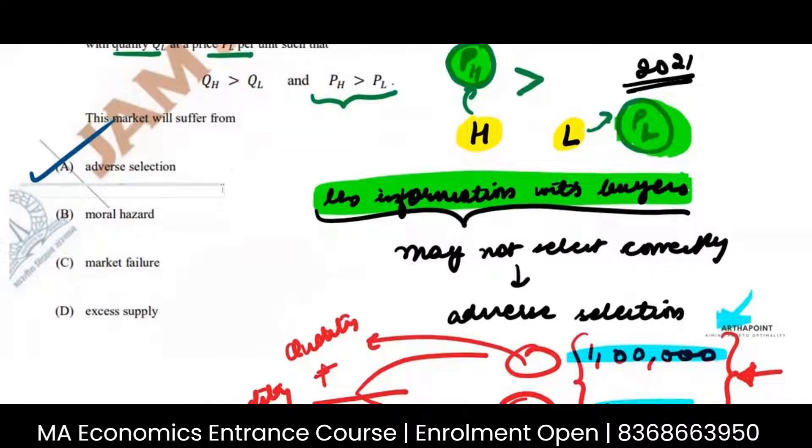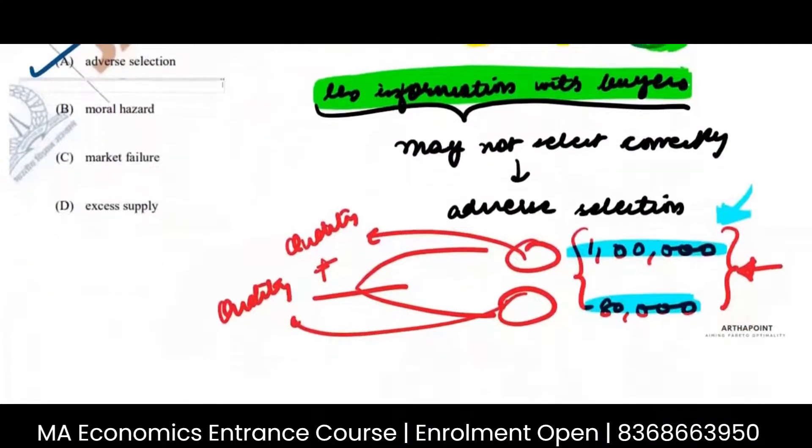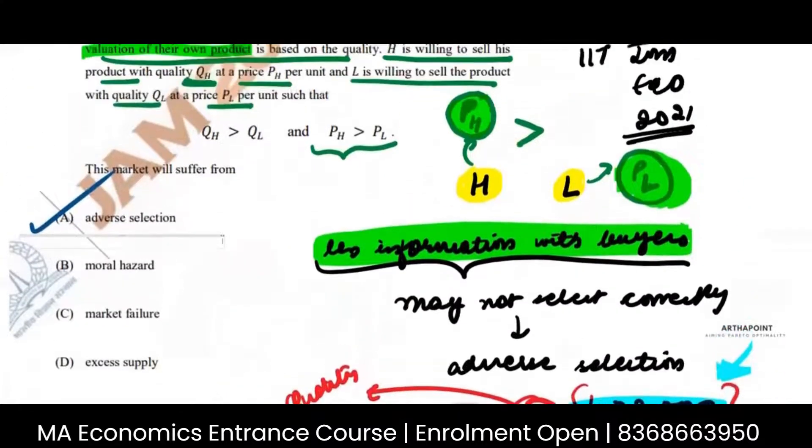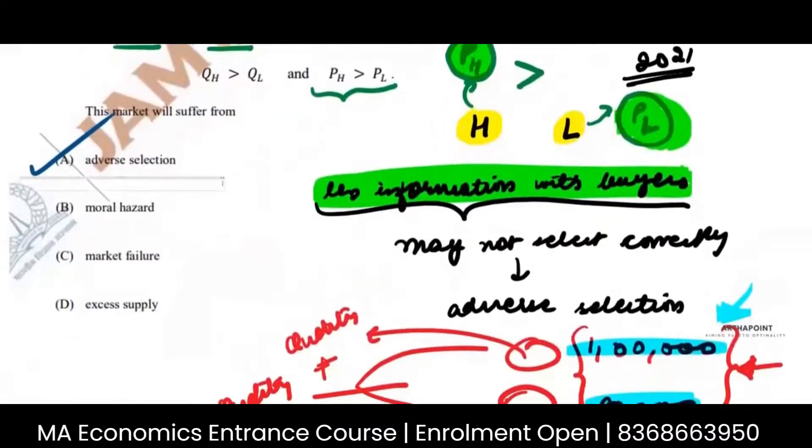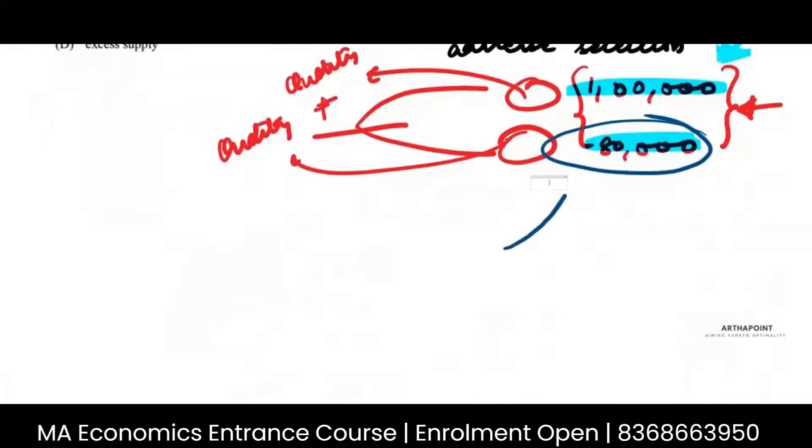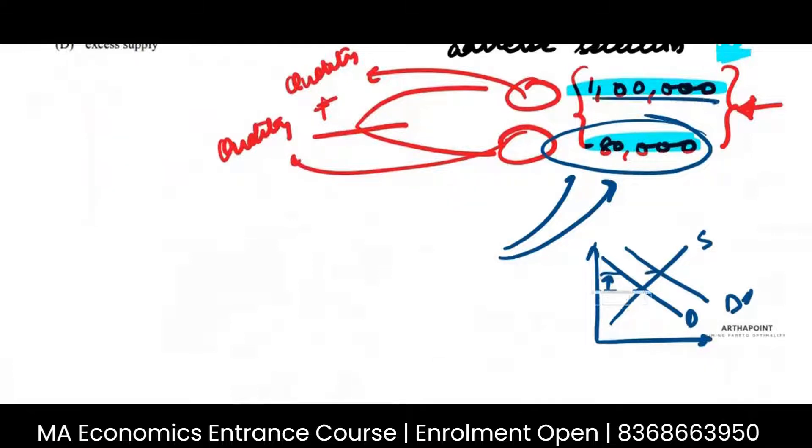Whenever there is a problem of adverse selection or there is a problem of moral hazard, either way, because the market fails, the market is not able to come to an equilibrium. It can be the case that whichever seller is selling at a low price, everybody wants to buy from them. So when the demand of this product increases, everybody is buying from this market. This is demand and supply. Demand of his product increases. He is able to increase the price.